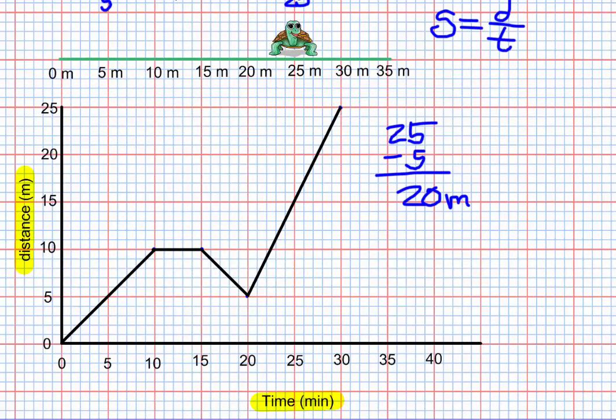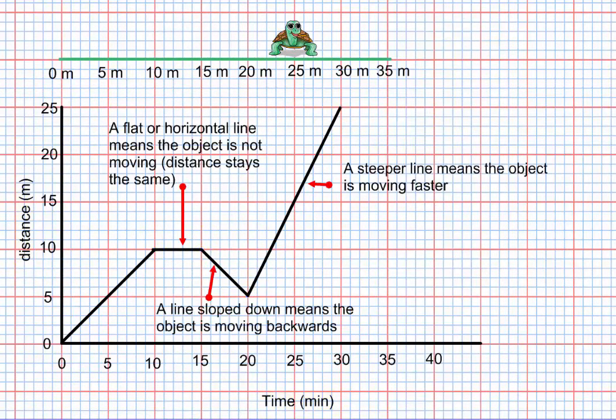Now what do we notice about this line compared to this line? It is steeper than this line. You can see for every 5 minutes, he went up 5. And this one, for every 5 minutes, he went 10. So what this means is that the steeper the line is, it means that the object is moving faster.